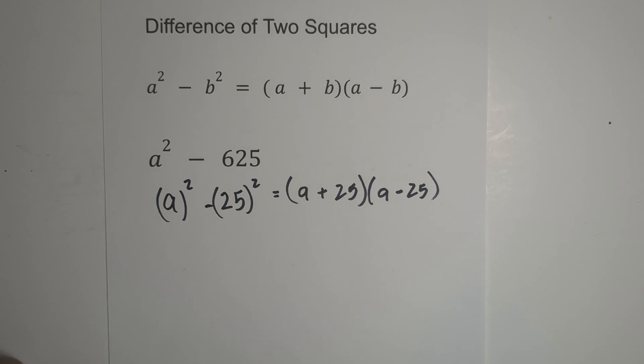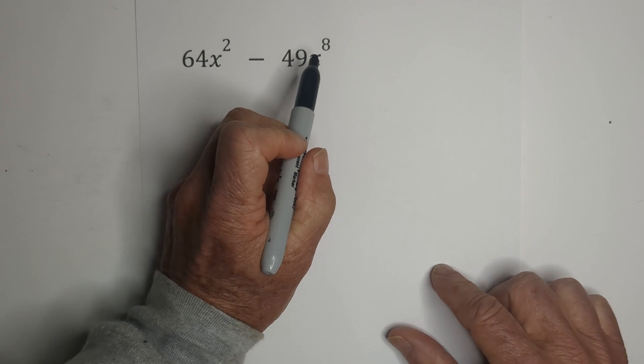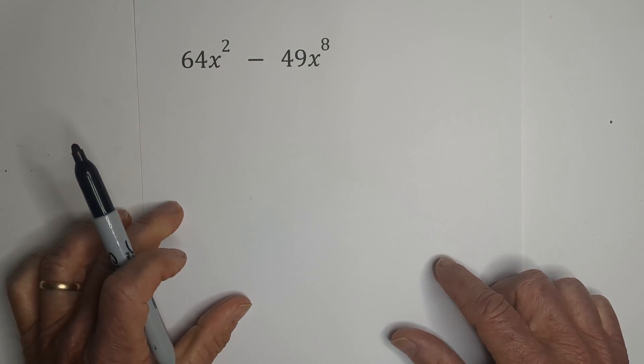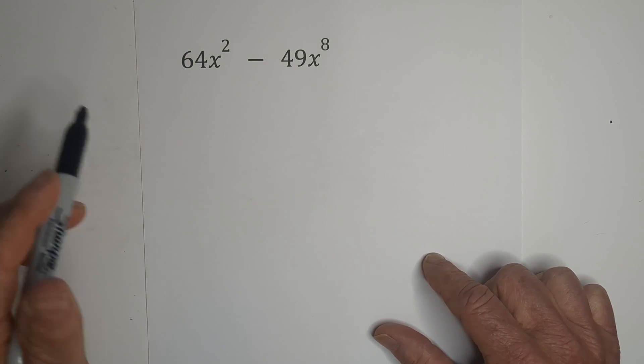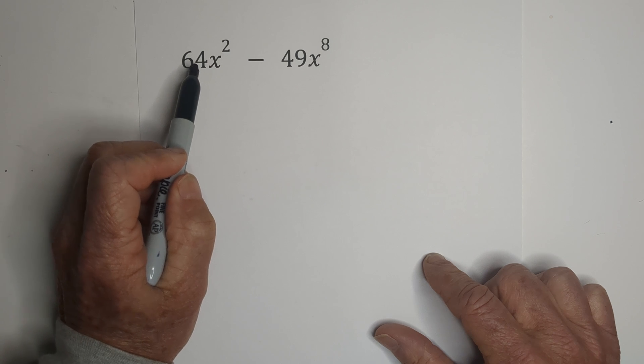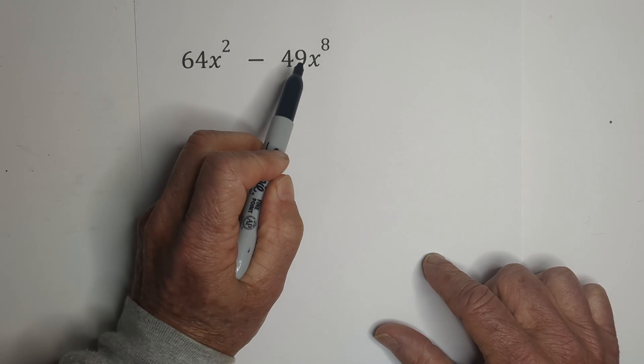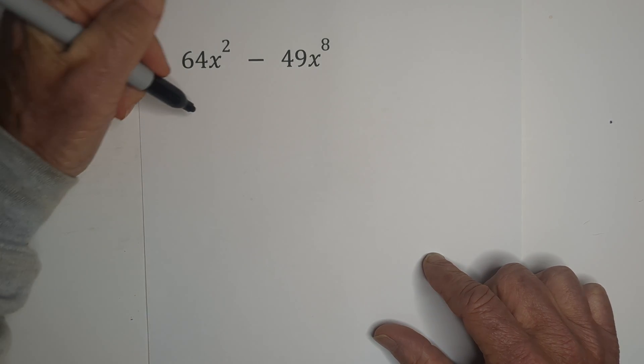Let's look at another example. The exponent does not have to be exactly a two or square, so let's see how we would work this one. First, I know that I have the difference of two squares because 64 is 8 squared, 49 is 7 squared. So let's rewrite it.